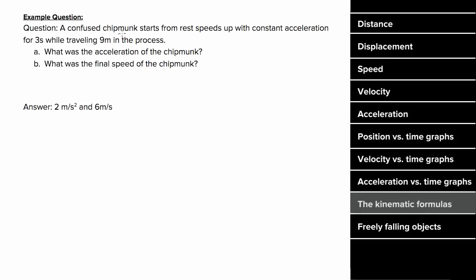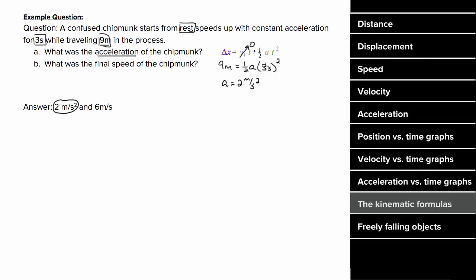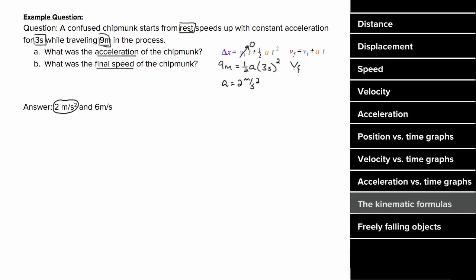During some motion, it takes a certain time t for an object to change its velocity from V initial to V final, and during that time the object will have a certain acceleration and displacement — all related by these formulas if acceleration is constant. For example, a chipmunk starting from rest with constant acceleration for three seconds, traveling nine meters: using the second kinematic formula, the acceleration is two meters per second squared. Using the first formula, the final velocity is six meters per second.